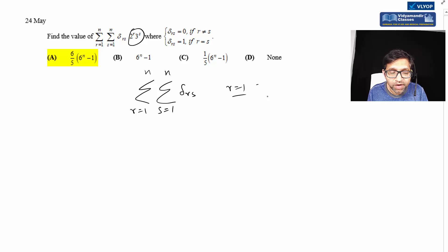When r equals one, I need to cover all values of s. So s equals one gives delta one-one, then when r equals two, s equals one gives delta two-one, then delta two-two, delta two-three, and so on.